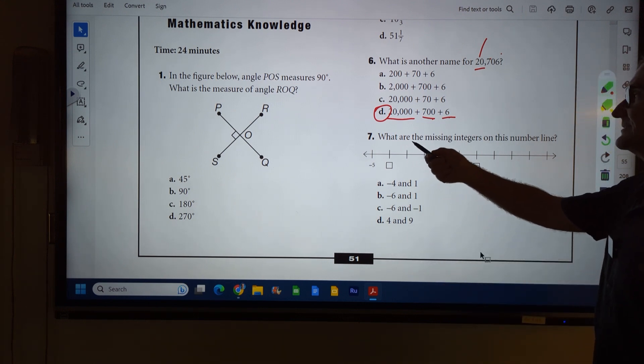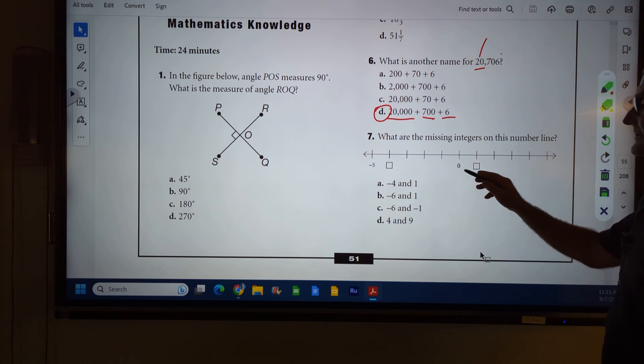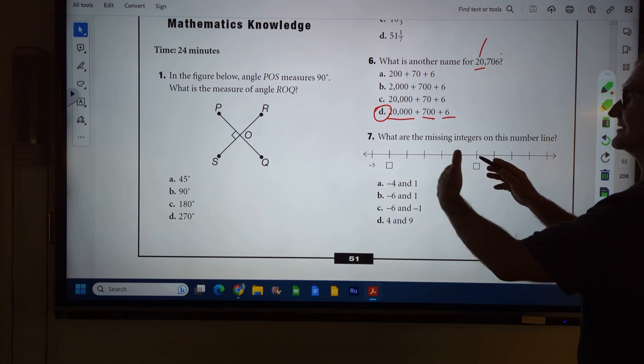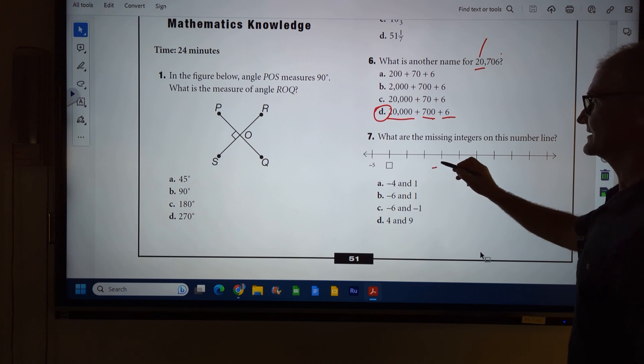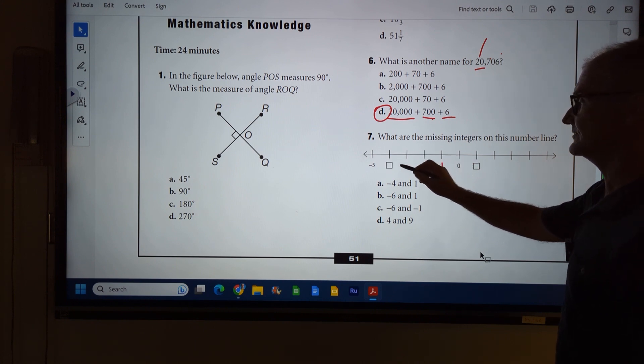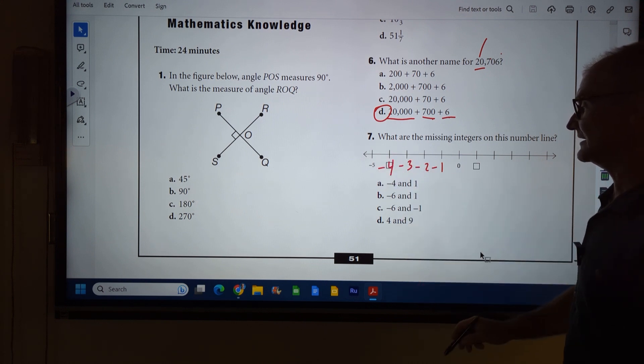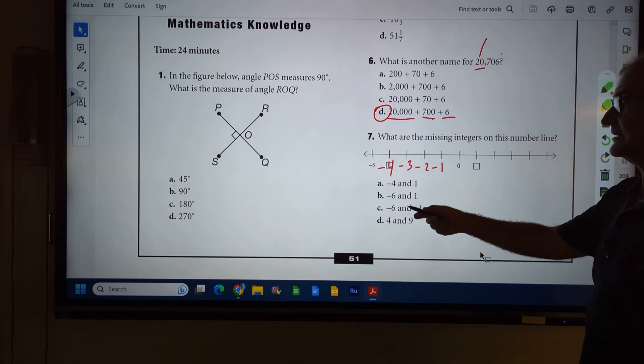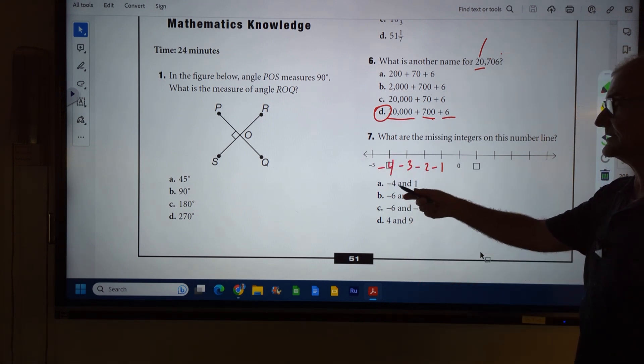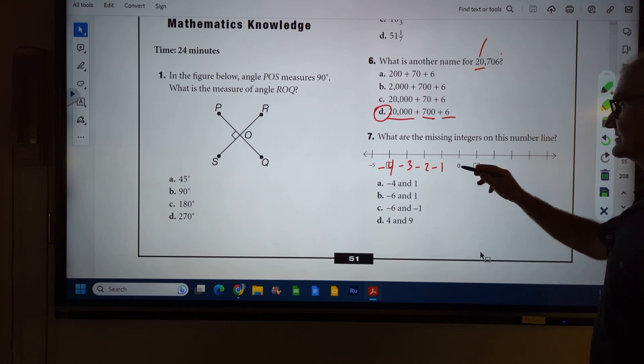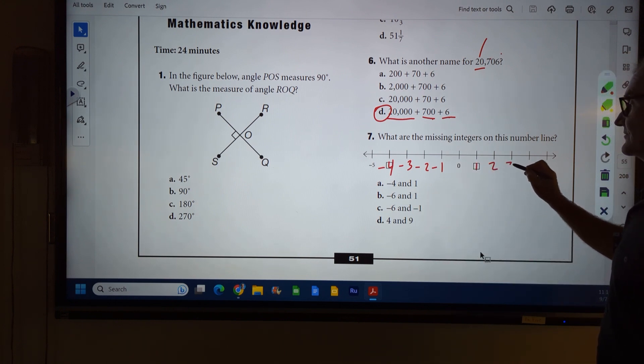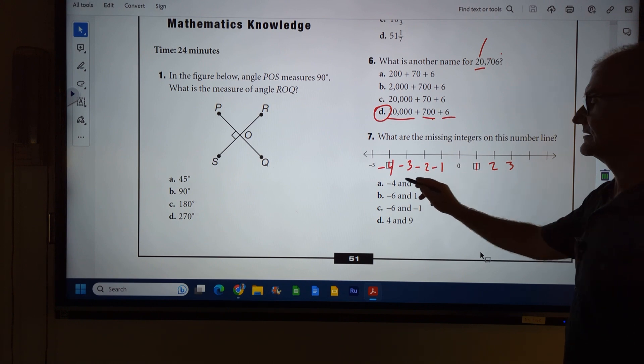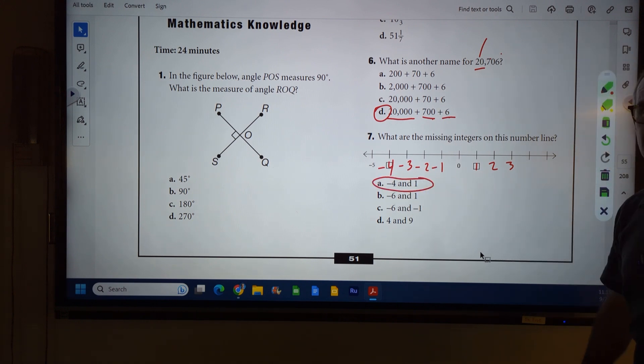Okay, number seven. What are the missing integers on this number line? Here's my zero. I'm going to the left, so that would be going negative, negative one, negative two, negative three, negative four, negative five. There's only one right here with a negative four in it, so it has to be answer A. Or zero, one, two, three. So it's going to be the negative four and the one. Correct answer, answer A.